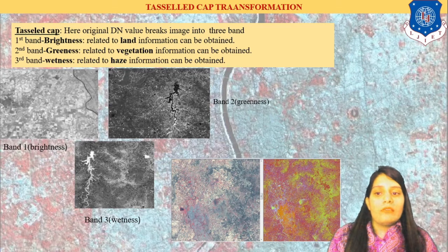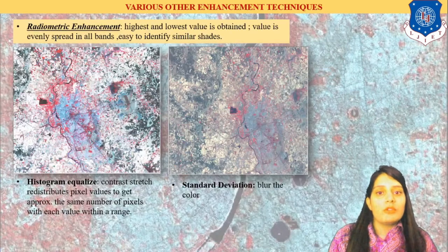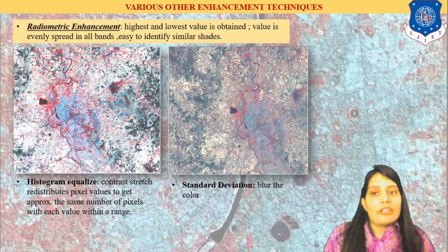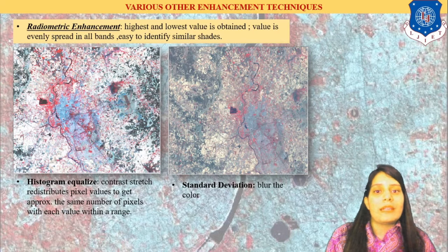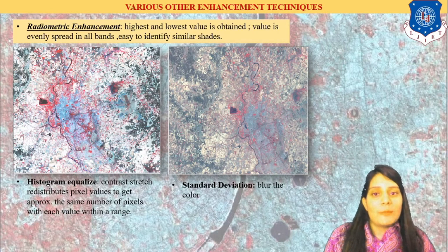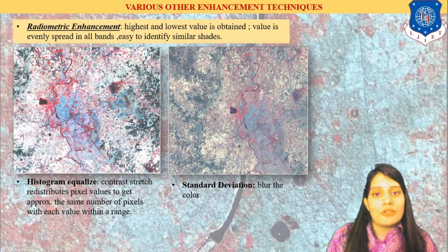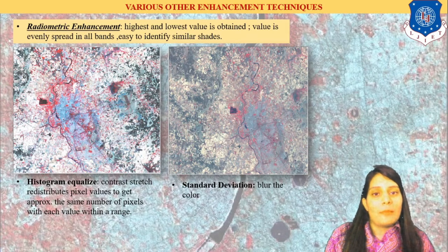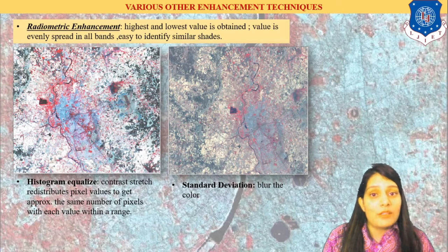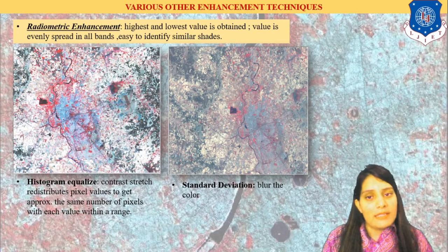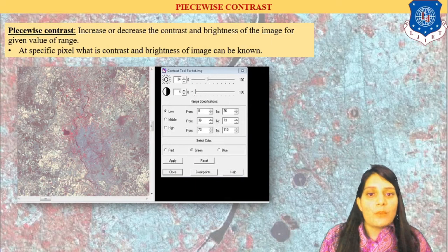Moving to various enhancement techniques used to identify data — first, radiometric enhancement. In radiometric enhancement, histogram equalization and standard deviation are available. Histogram equalization distributes all the pixel values of our image equally across the histogram so features can be identified clearly. The highest and lowest values are physically updated. Piecewise means changing the contrast and brightness of the image as per requirement — I can change it for a specific pixel.